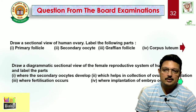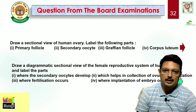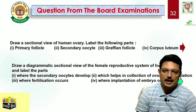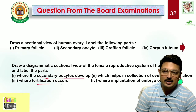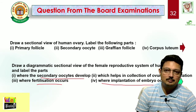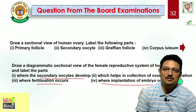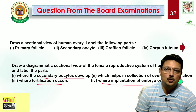This was the female reproductive system. Let us look at some questions generally asked in board examinations: Draw the sectional view of the human ovary and label the primary follicle, secondary follicle, Graafian follicle, and corpus luteum. Draw the diagrammatic sectional view of the female reproductive system and label the parts where secondary oocyte develops, which structure helps in collection of ovum after ovulation, where fertilization occurs, and the site of implantation of the embryo. You must go through this video and your textbook and take notes to answer these correctly.